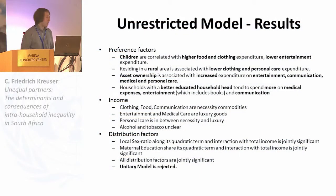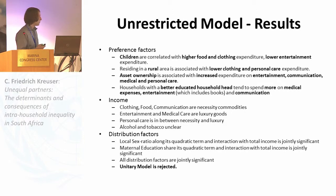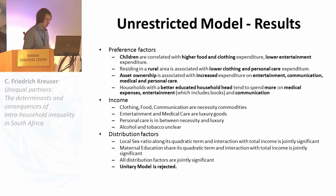For the unrestricted model, the preference factors are broadly similar to those in the restricted model. Children are correlated with higher food and clothing expenditure and lower entertainment expenditure. Households in rural areas spend less on clothing and personal care. Asset ownership is associated with increased expenditure on entertainment, communication, medical, and personal care. Better-educated household heads tend to spend more on medical, entertainment, and communication. In terms of distribution factors, the local sex ratio along with its quadratic term and interaction with total income is jointly significant, as is the maternal education share with all its interactions, and all distribution factors are jointly significant. We therefore fairly comfortably reject the unitary model of household behavior.